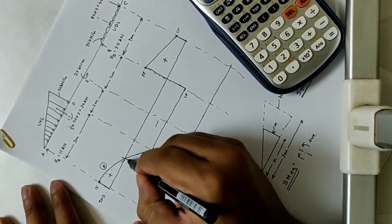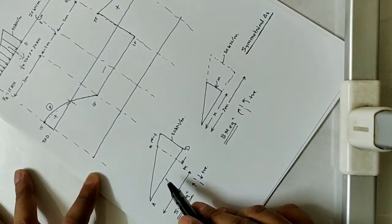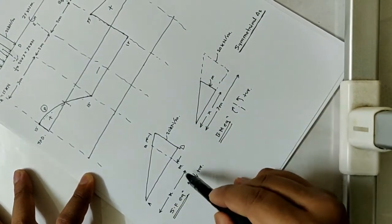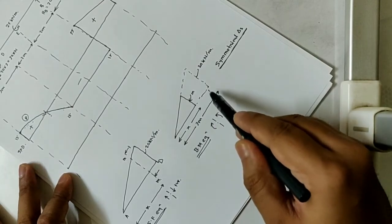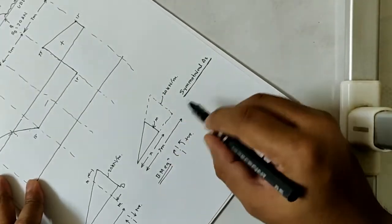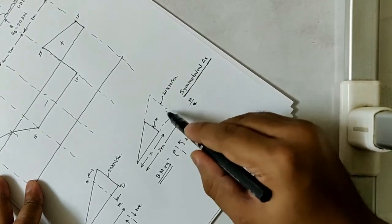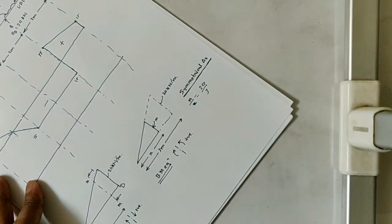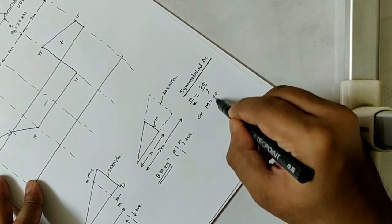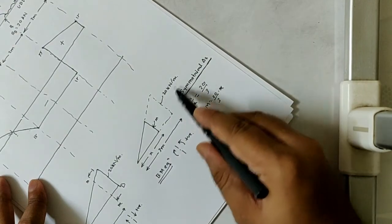Now to calculate this point, known as the point of contraflexure, we are taking similar triangles. It is an entire triangle from A to D. We take a section at a distance X from A. This is the X distance and the total span is 3 meters. By the similar triangles rule, we can write M/X = 20/3, so M = (20/3)·X. This is the value of M — we have the value 20 kN at the end.